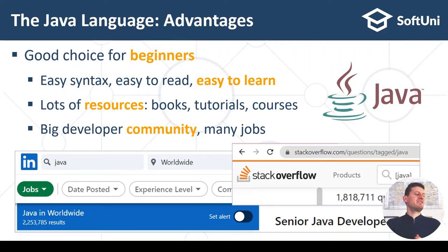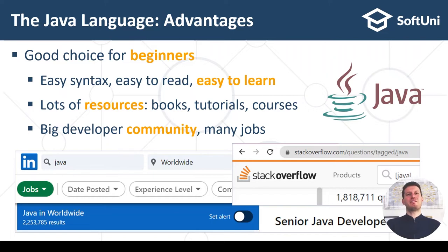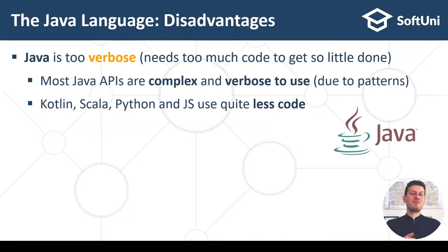This is not true with all languages. For example, if you write in some specific or new language that is not quite popular — like language D, which does not have many jobs or a big community — you will be alone. Java has, of course, some disadvantages.